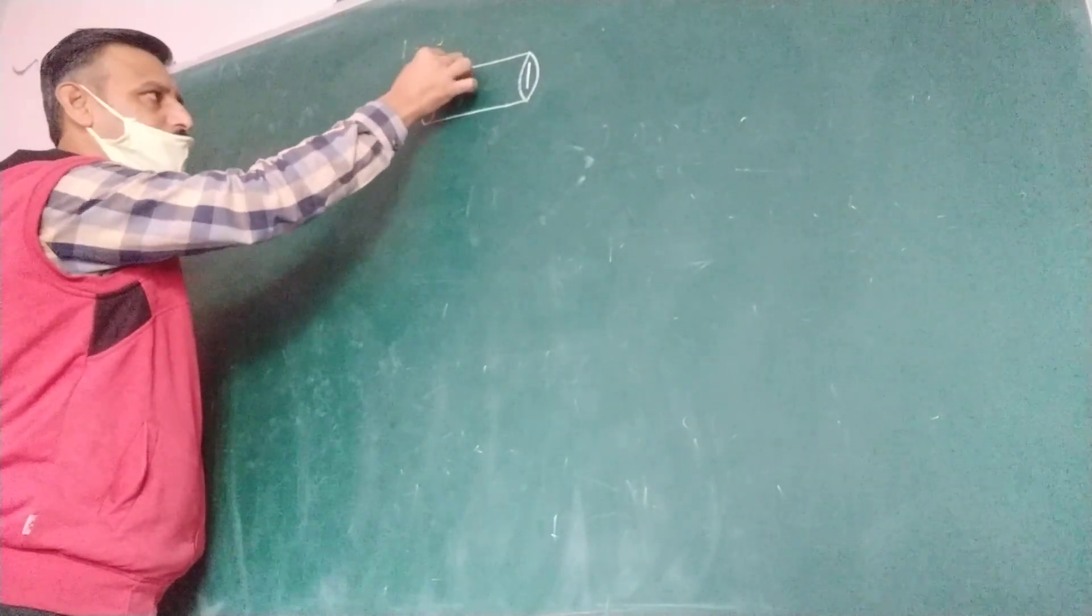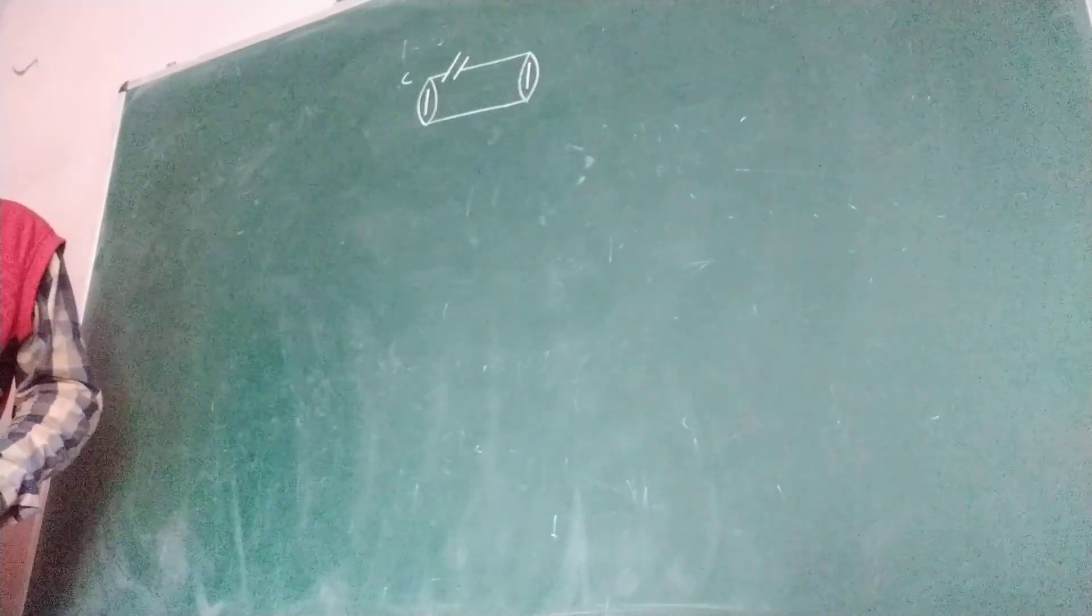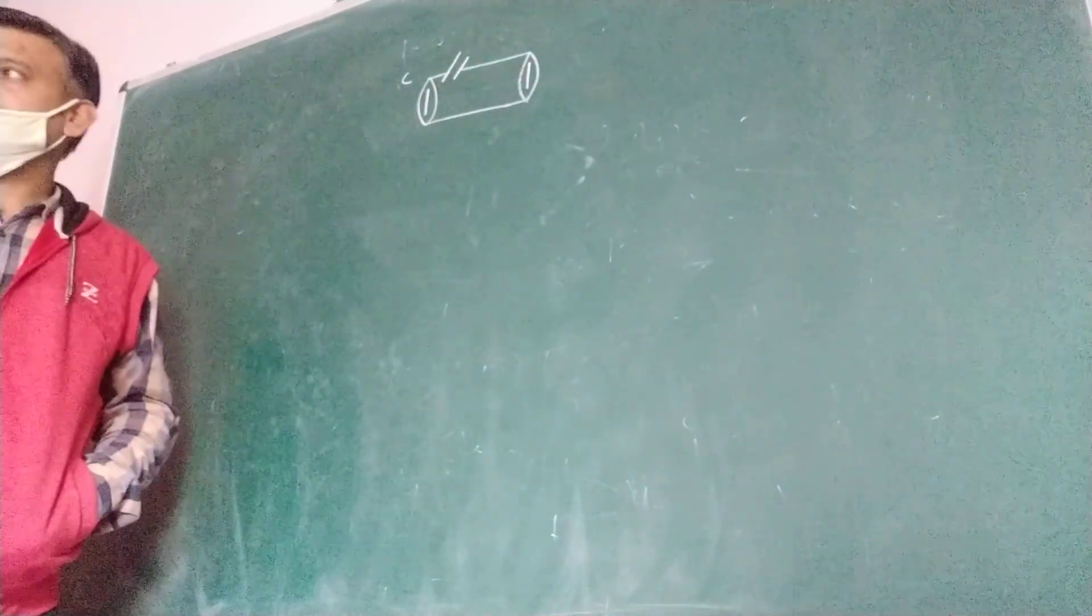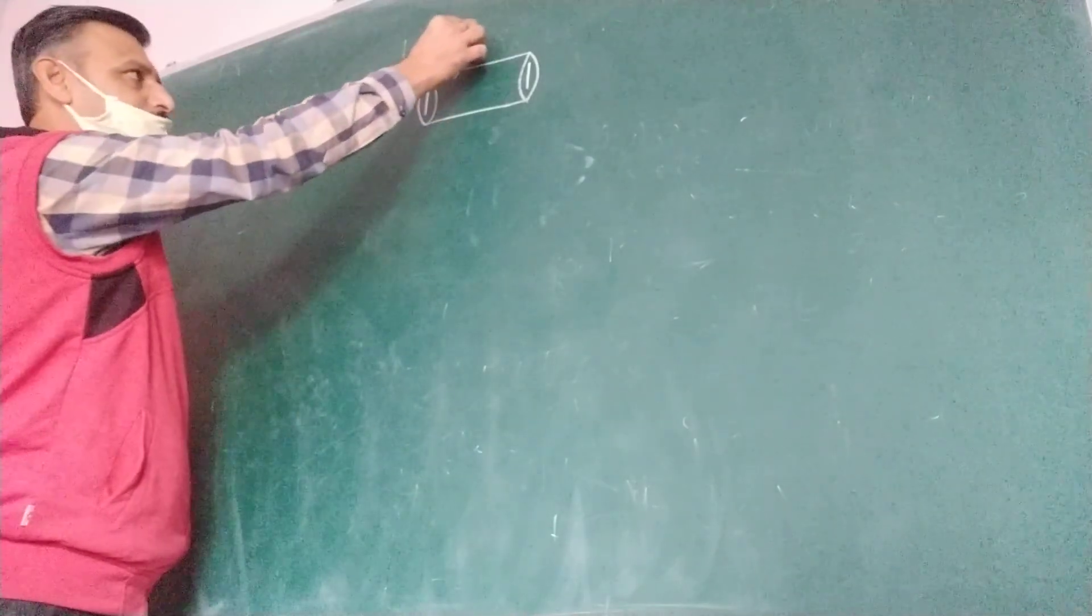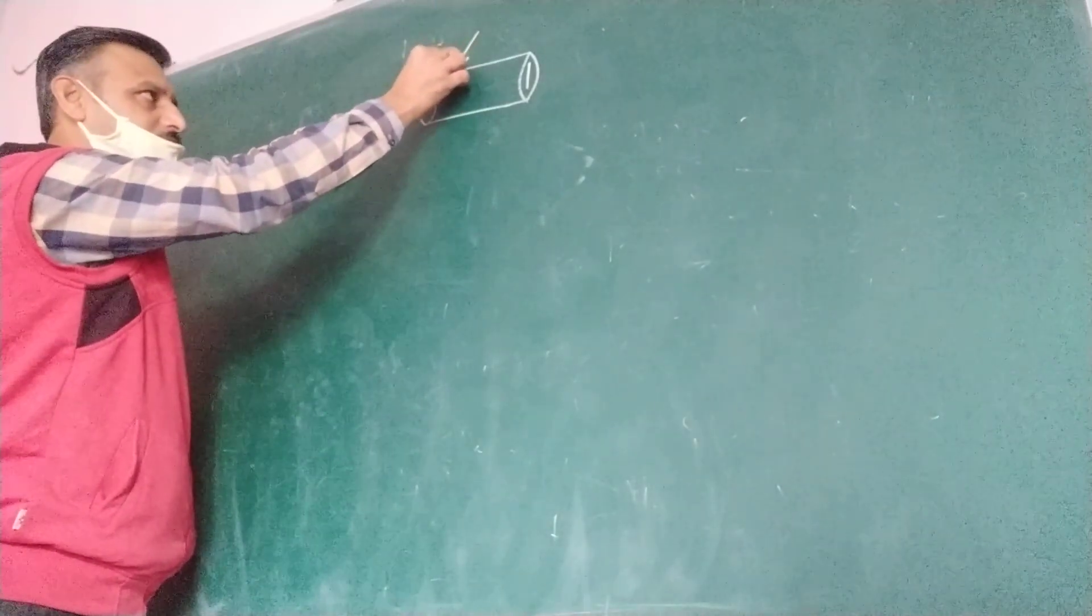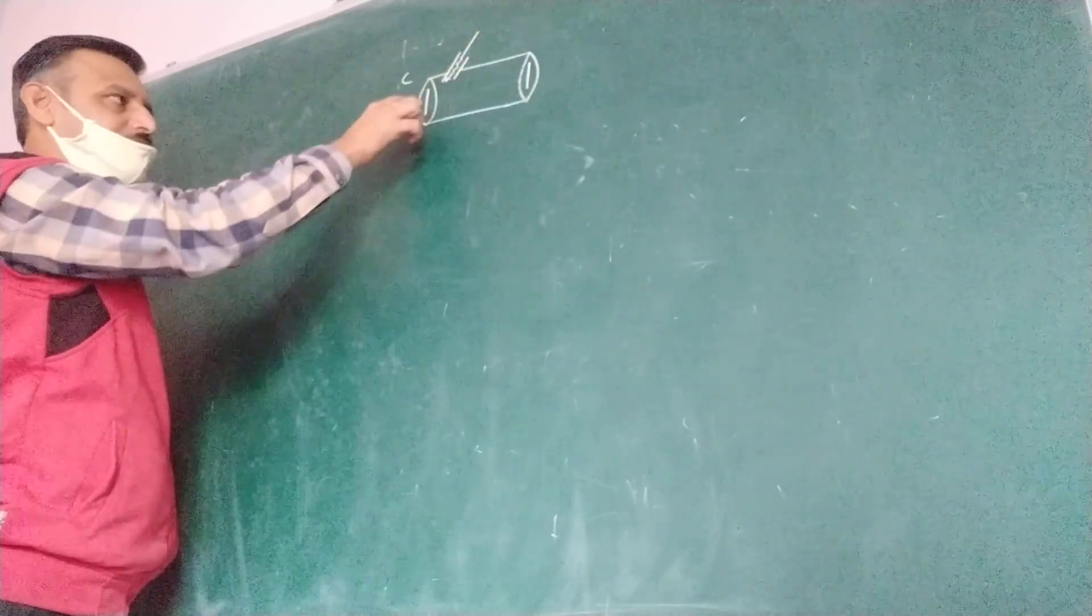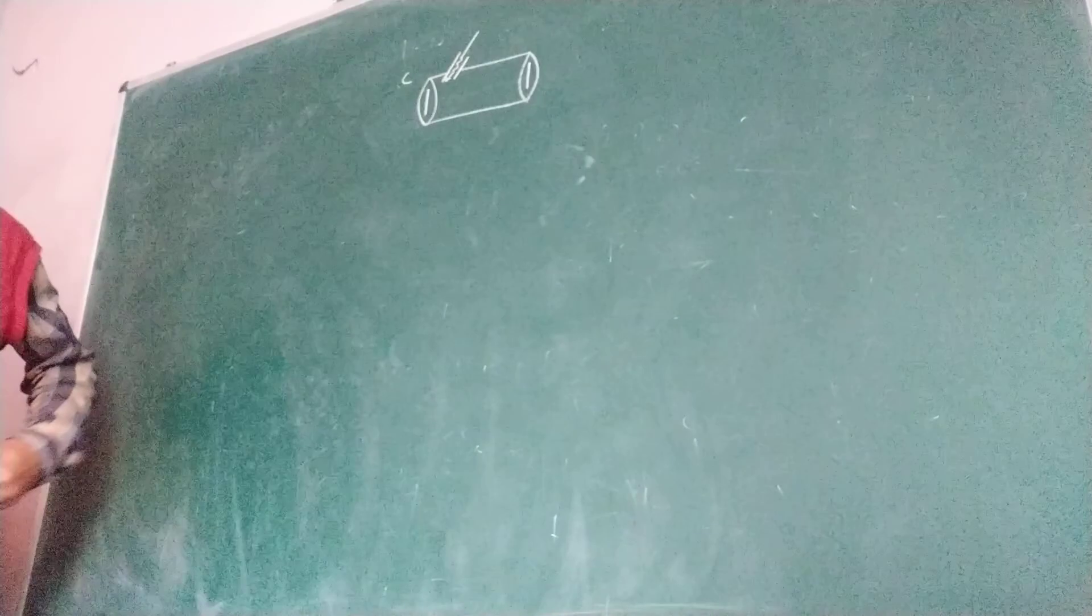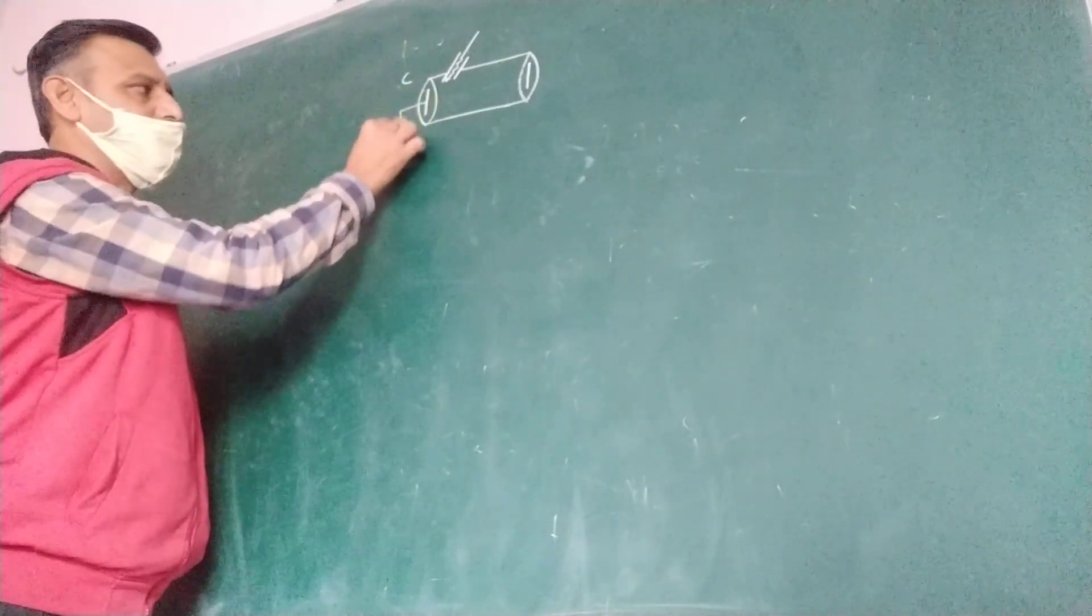When light of suitable frequency - light of suitable frequency - light has a minimum frequency. This radiation will fall, and here the ejection of electrons will take place.